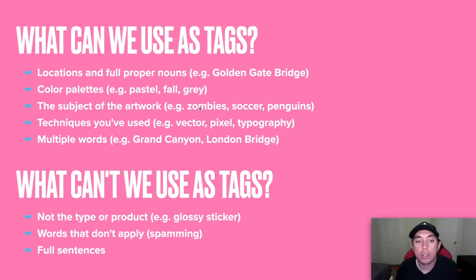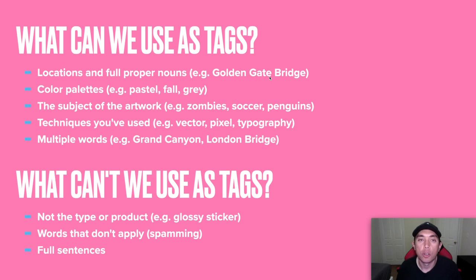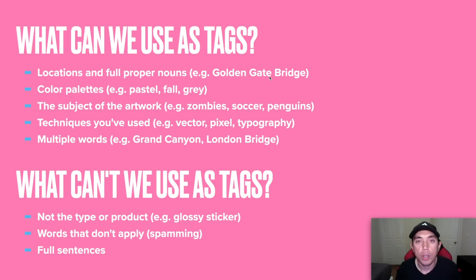The subject of the artwork — so what you have in your design, let's say zombies or soccer or penguins — those things that are in your designs, of course you can use those as tags. Techniques you've used — so if you drew this as a vector or pixel, or used typography — those can be used as tags. Multiple words can also be used as tags. For example, Golden Gate Bridge, Grand Canyon, London Bridge — those are two or more words put together, so you put the comma after the last word. And when you do multiple words, you don't have to repeat each word separately. When you do Grand Canyon as a multi-word tag, it will pick up for Grand and for Canyon individually, so you can just do London Bridge and that would be good.